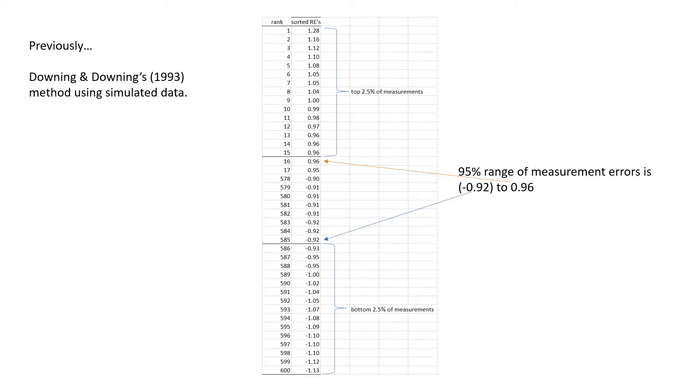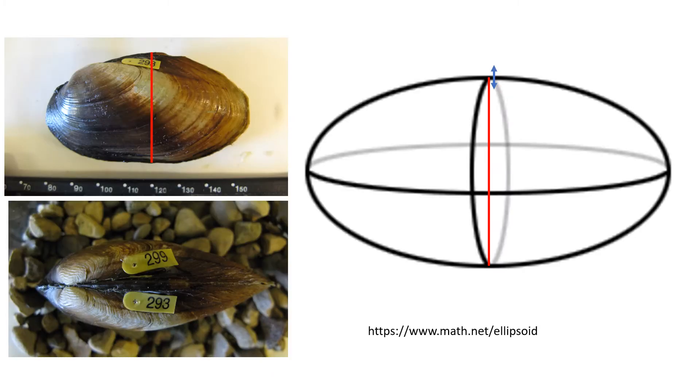In the last episode, we did a little example to demonstrate how Downing and Downing came up with their 95% measurement error range, and that represented basically how much wiggle in the up and down measurement attributable to things like where the calipers were positioned on the specimen, or you might say human error in the measurement of that dimension.